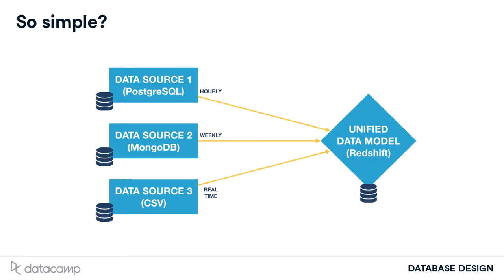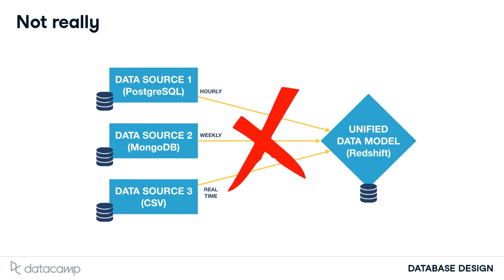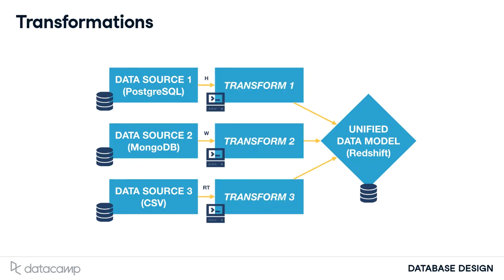So that's it — you just plug your sources to the unified data model? Not really. Your sources are in different formats, and you need to make sure they can be assembled together. Enter transformations. A transformation is a program that extracts content from a table and transforms it into the chosen format for the unified model.